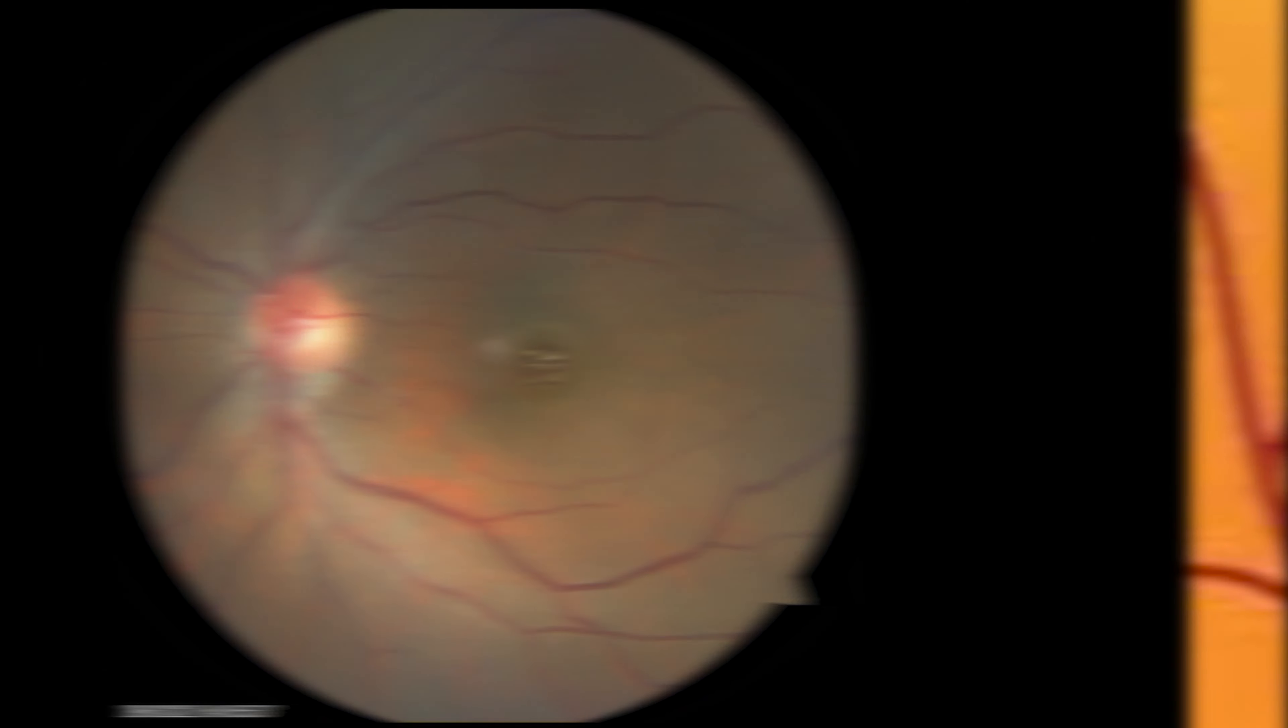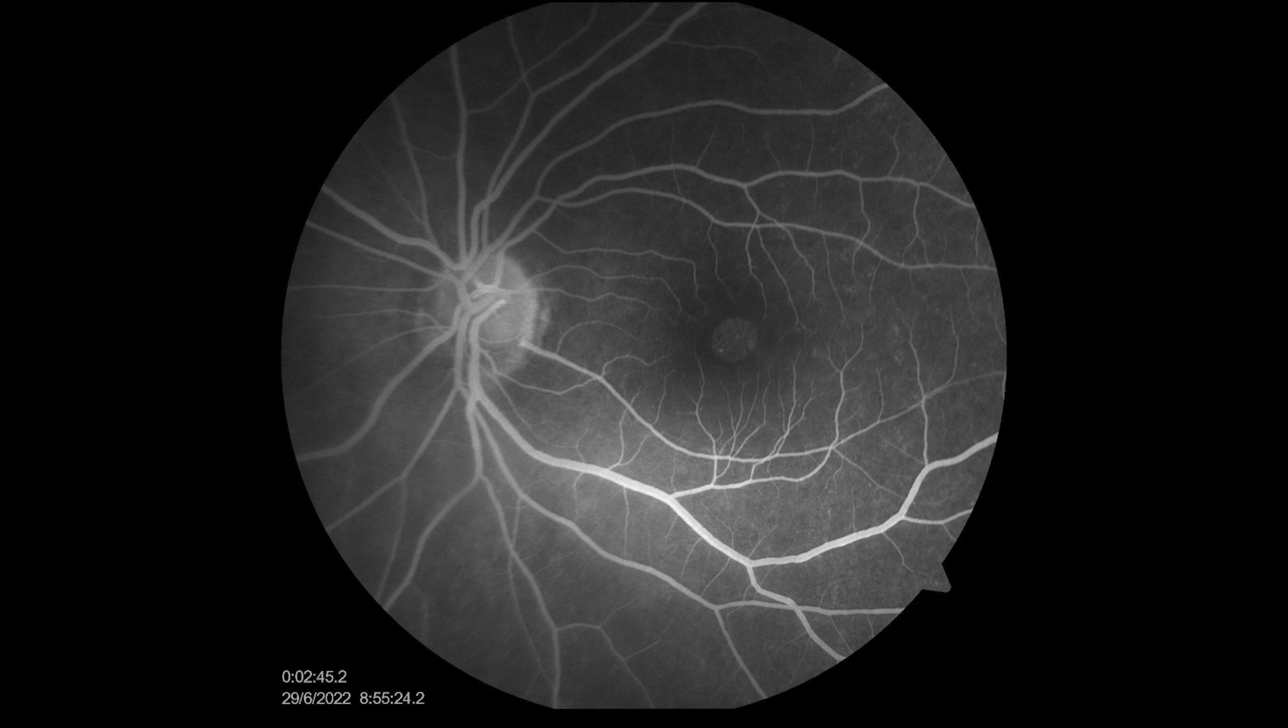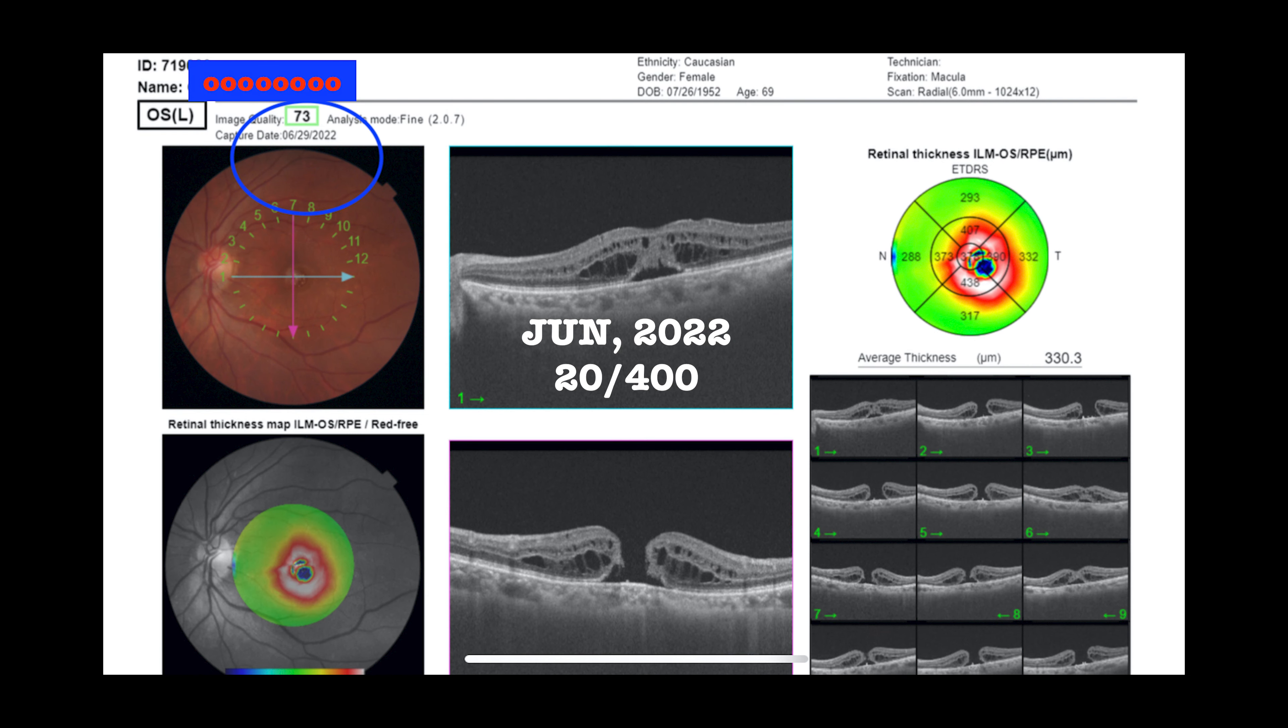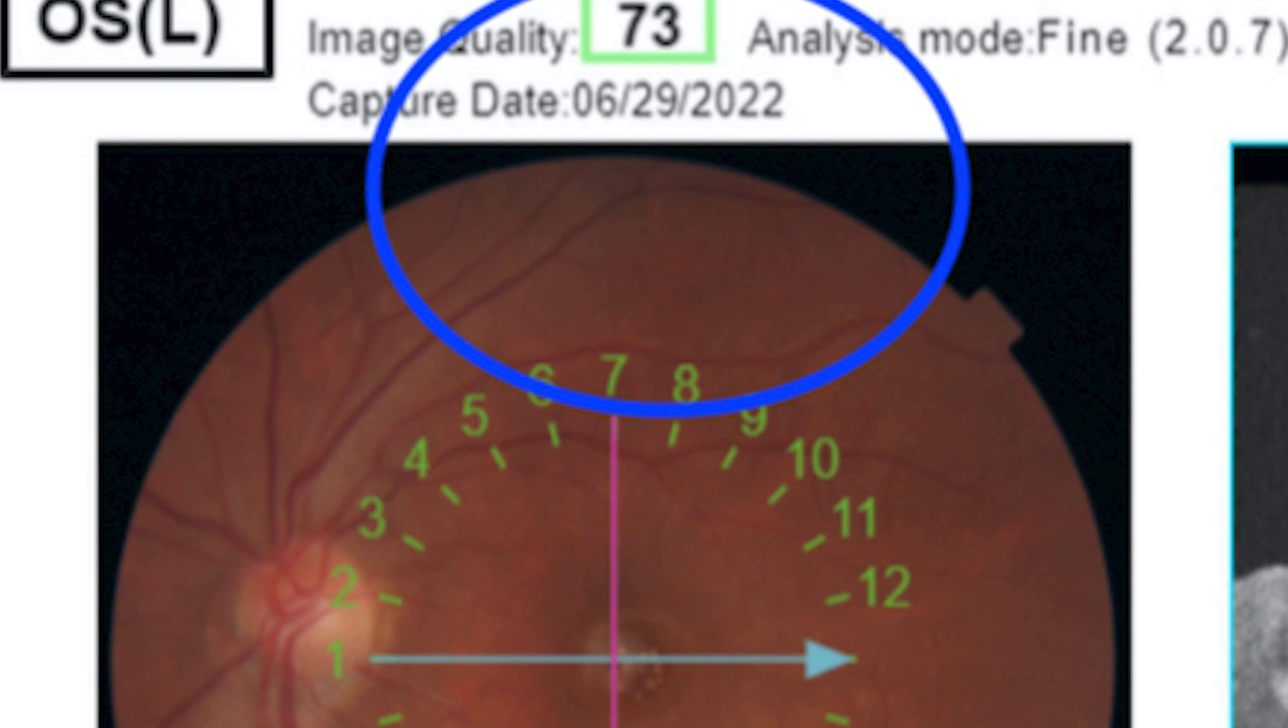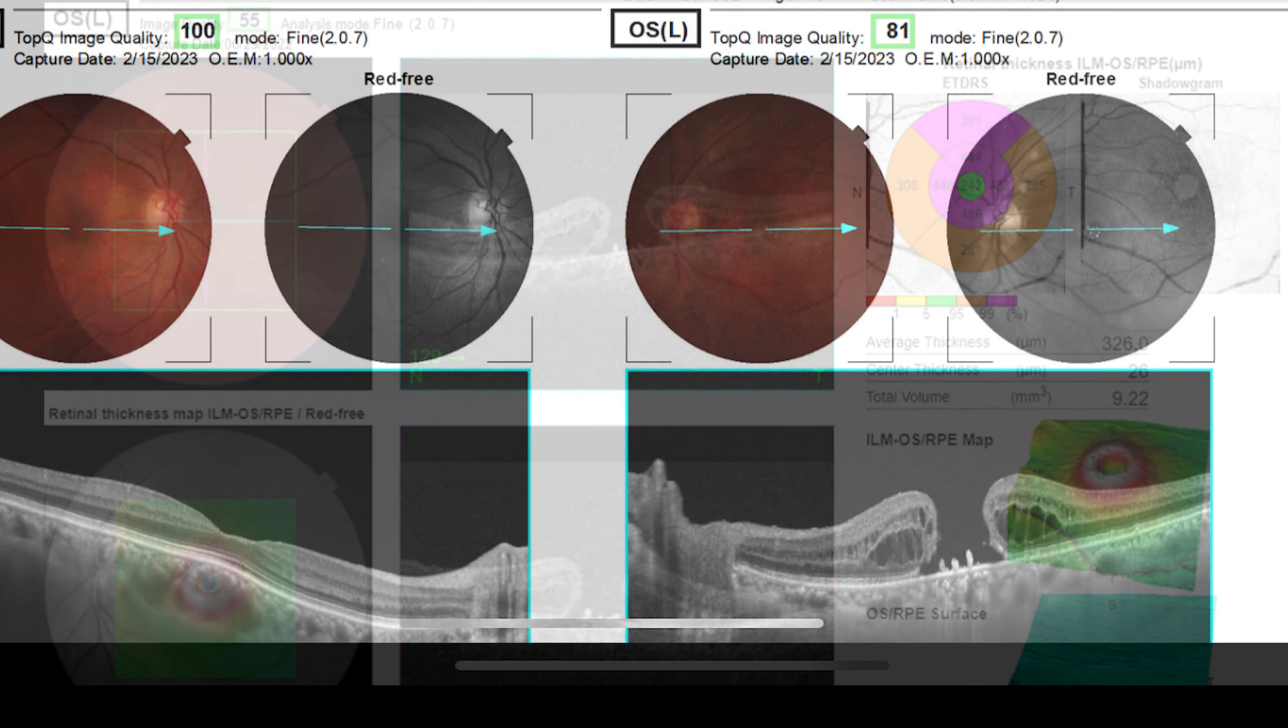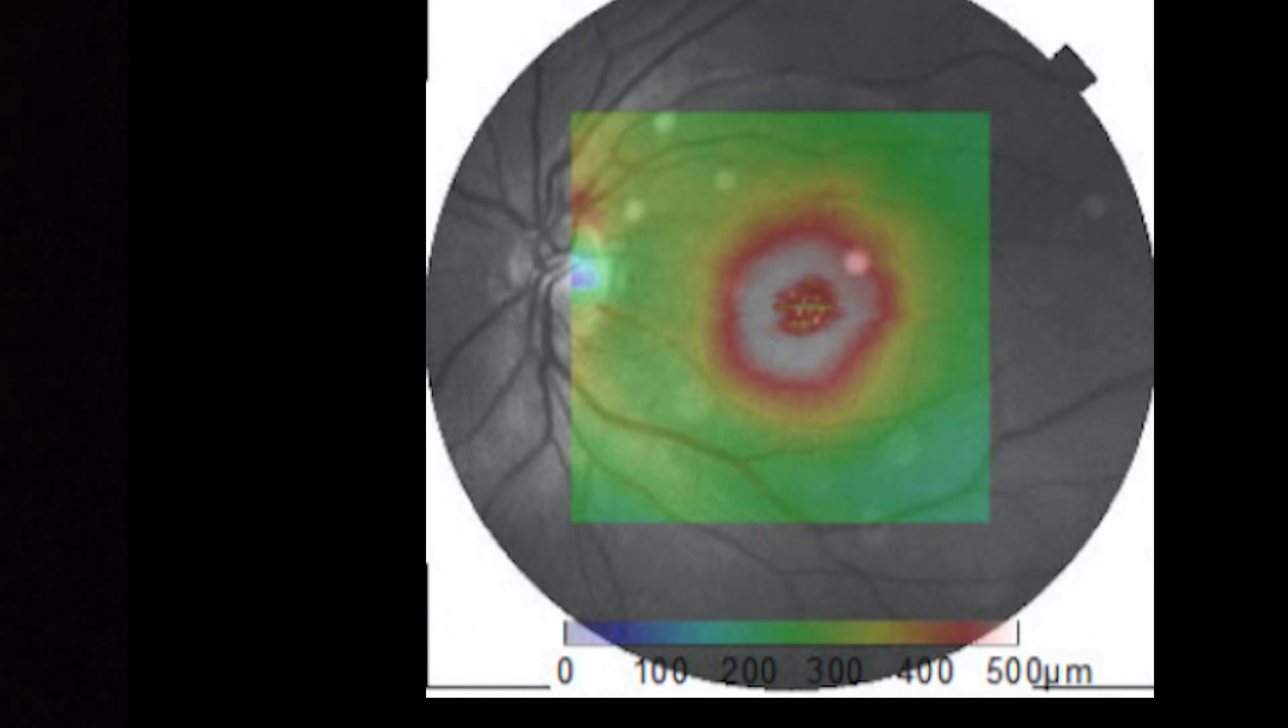These are color FA picks and preoperative OCTs from the patient. Different views can show a full thickness macular hole, a large one. It measures 640 microns. The first OCT was performed in mid-June 2022 and another one repeated February 2023. The patient was really reluctant to have surgery all this time.